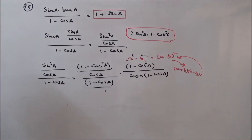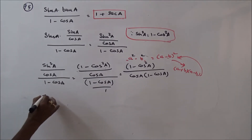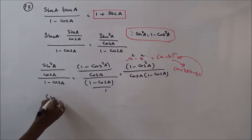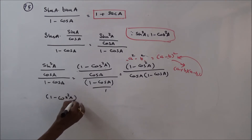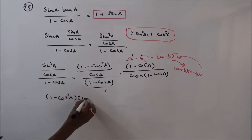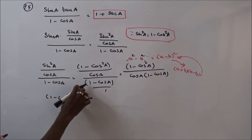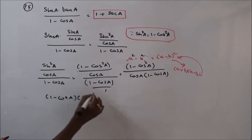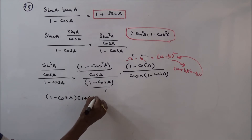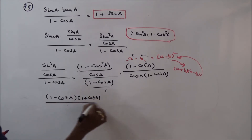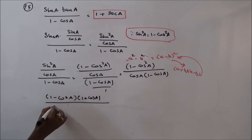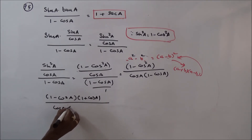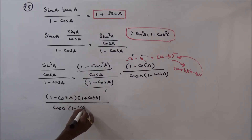So 1 minus cos squared A can be written as 1 plus cos A times 1 minus cos A. This gives us 1 plus cos A times 1 minus cos A, divided by cos A times 1 minus cos A.